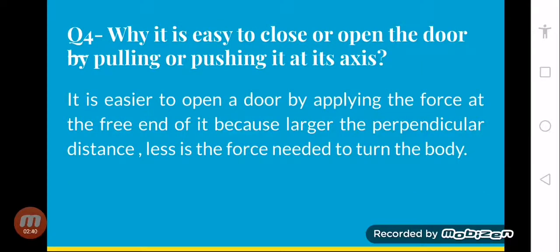Question number four, why is it easy to close or open the door by pulling or pushing it at the axis? Yani ki hamara jo door hai, usko agar hum uske axis se — agar jo uska handle hai — wahan se agar hum usko open and close karte hain, to woh bahut easily hum usko handle kar sakte hain. Agar aap apne door ko jahan pe woh attach hua hota hai, us attachment point se agar aap usko open ya close karne ki koshish karein, to aapko bahut zyada force lagani padegi aur aap usko band nahi kar sakoge.